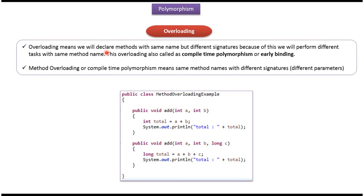Overloading means we will declare methods with the same name but different signatures. Because of this we will perform different tasks with the same method name. This overloading is also called compile time polymorphism or early binding — same method names with different signatures or different parameters.